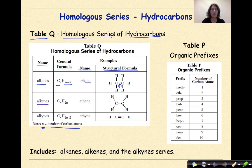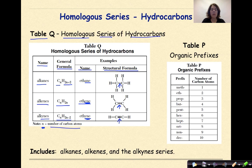Alkenes have the general formula CnH2n. So ethene — eth means two carbons — but the ENE ending tells me I'm going to have a double bond between the two carbons. And finally, alkynes, which have a general formula of CnH2n-2. We're going to look for that YNE ending to indicate a triple bond between the two carbons.